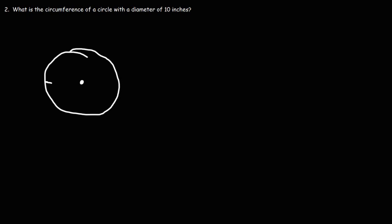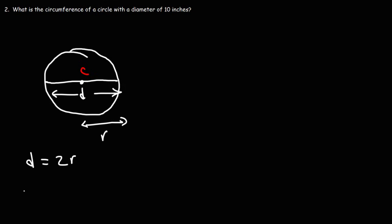Now let's move on to the second problem. What is the circumference of a circle with a diameter of 10 inches? Let's draw a picture. You need to divide the diameter by 2, or multiply by one half. So if the diameter is 10 inches, the radius of the circle is going to be half of that. Half of 10 is 5.